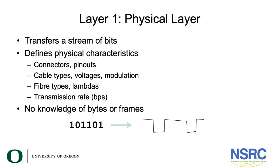Another important characteristic at layer one is the transmission rate in terms of bits per second. If you're transmitting at 10 megabits per second or 100 megabits per second, that's very much a characteristic of layer one. But layer one doesn't have any concept of bytes or frames, it doesn't have any concept of how to route data — it's just trying to send ones and zeros from one end of a link to the other.